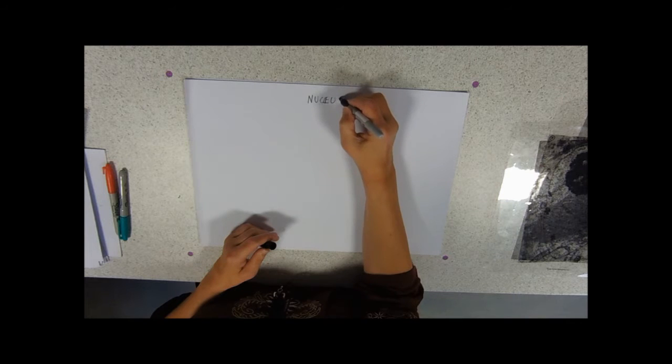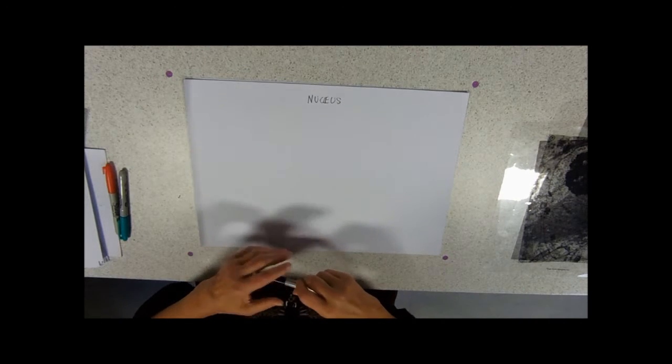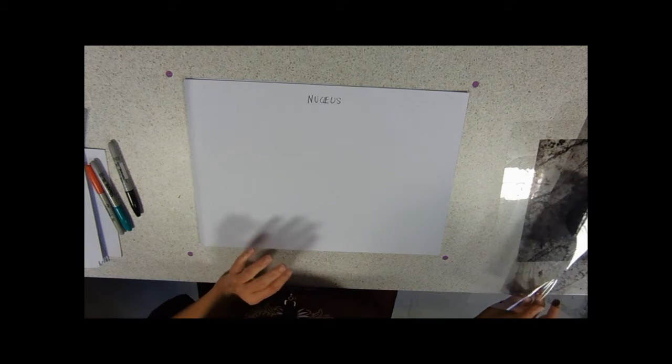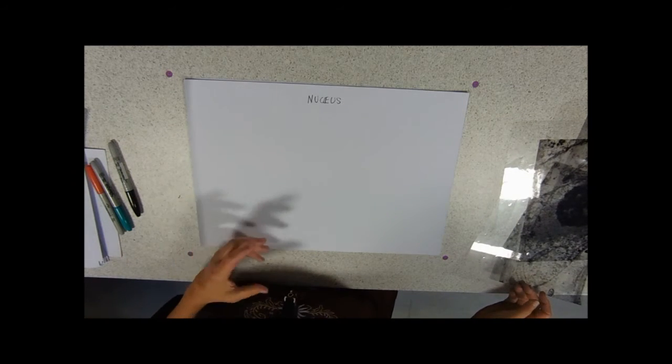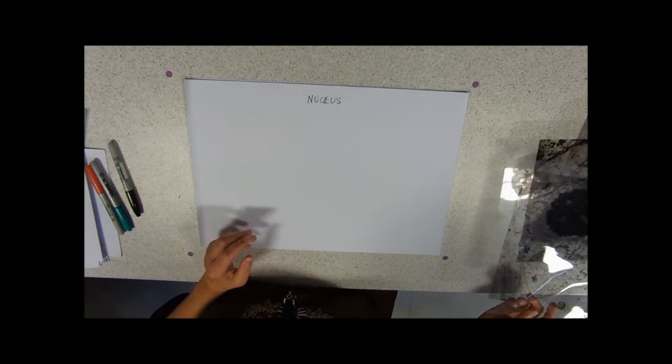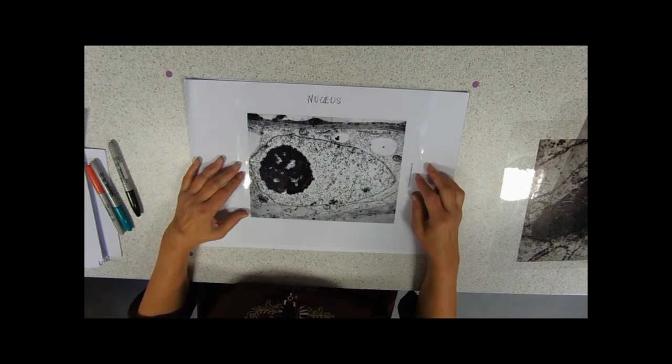So that's spelled N-U-C-L-E-U-S. I clearly can't spell it. If you look down a light microscope pretty much all you see is a dark staining blob, but if we look at an electron micrograph we can see various features of the nucleus.